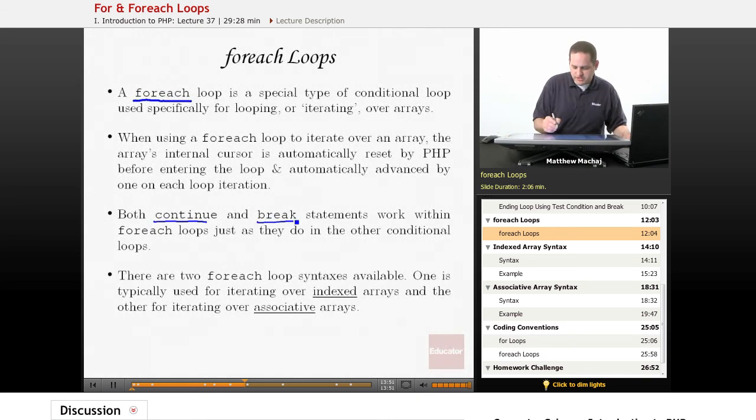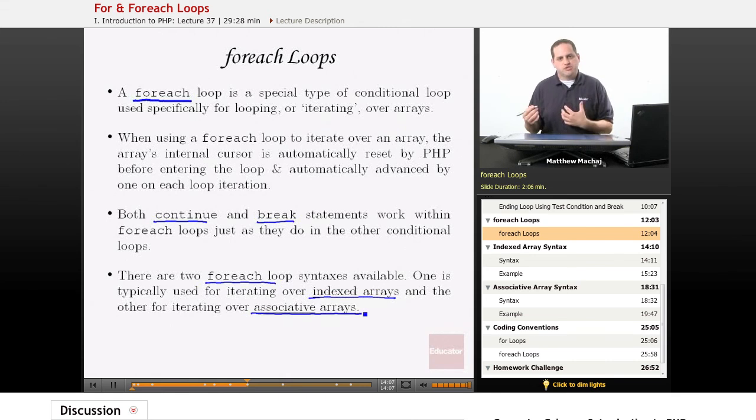The foreach loop actually comes in two syntaxes. They both can be used for indexed arrays and associative arrays, but typically one is used for iterating over indexed arrays, so we're just going to call it the indexed array syntax. Likewise, there's one that's used typically for iterating over associative arrays, so we're going to call that the associative array syntax.